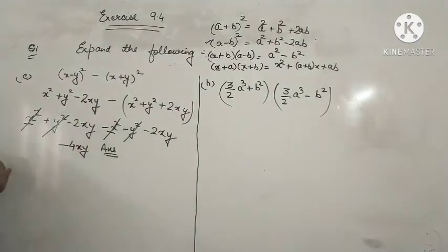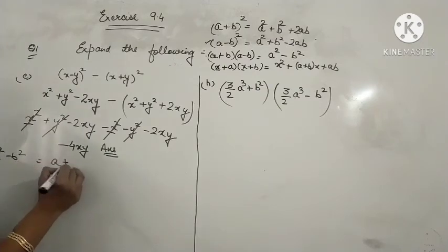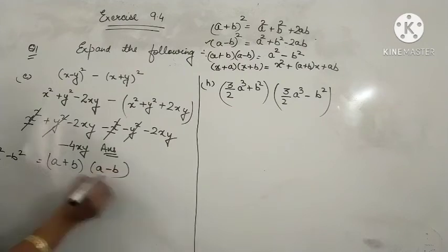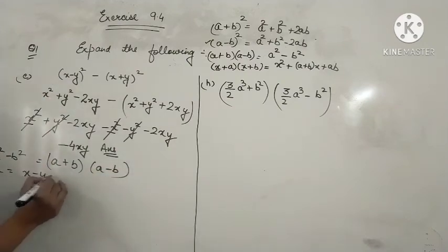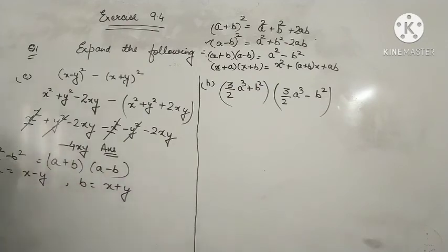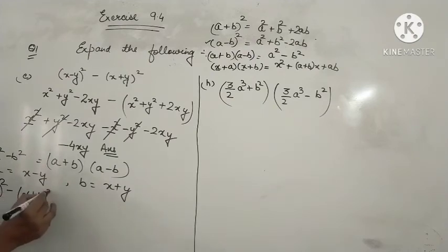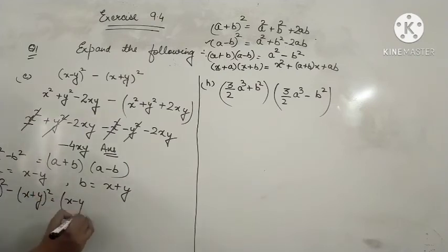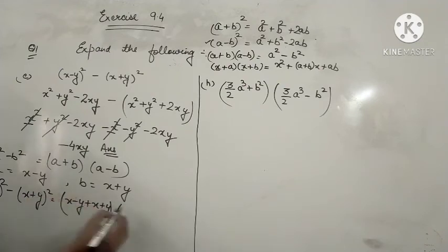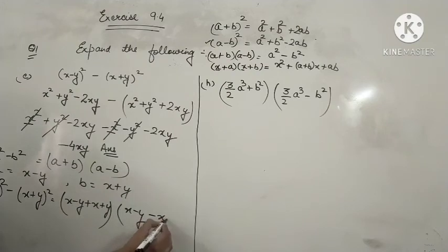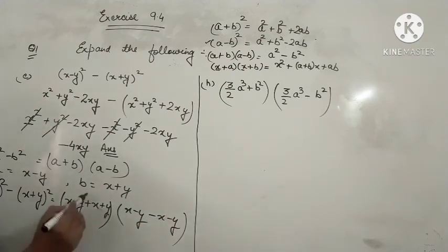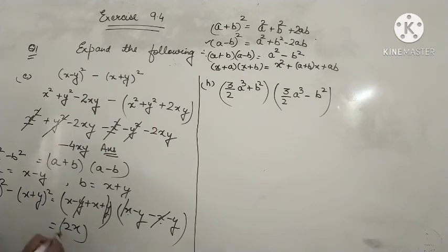Now the second way. We use A squared minus B squared equal to A plus B into A minus B. Here A is X minus Y and B is X plus Y. Substituting: X minus Y plus X plus Y into X minus Y minus X minus Y. Minus Y and plus Y cancel; X and minus X cancel. What is left: 2X into minus 2X equals minus 4XY. This confirms our answer.